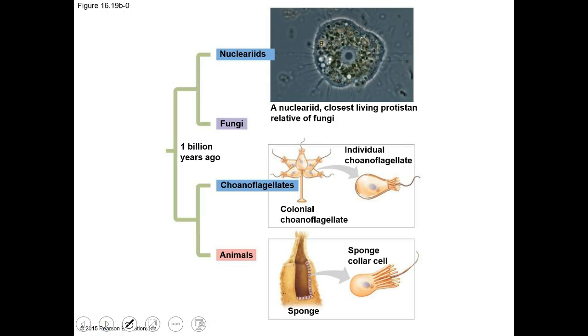Molecular and morphological evidence suggests that coanoflagellates are the closest living protist relatives to animals. It's interesting because sponges, which are animals, have little collar cells that look really similar to coanoflagellate cells when they live together — suggesting these protists and animals are very closely related. If you have any questions or if this moved too fast, send an email and we'll work through it before the next exam.